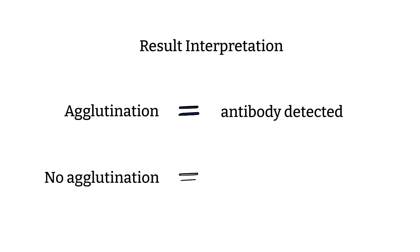Interpretation. When you use the eluate testing against the reagent red blood cells, if you see agglutination, antibody detected. No agglutination, no antibody detected.